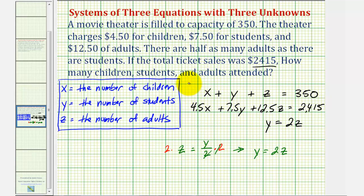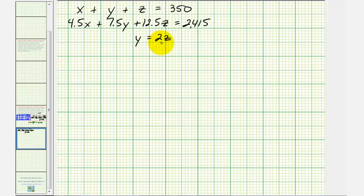This is the system of equations we want to solve for x, y, and z to determine how many children, students, and adults were in the theater. To solve this system, we want to form two equations with two unknowns, then solve that system for one variable and perform back substitution to find the remaining variables.